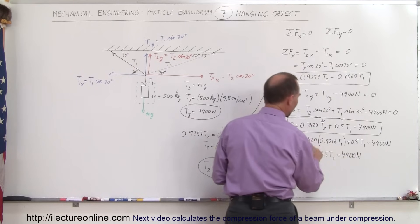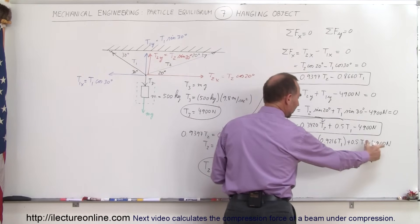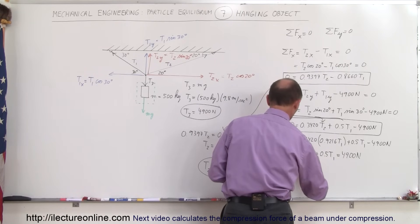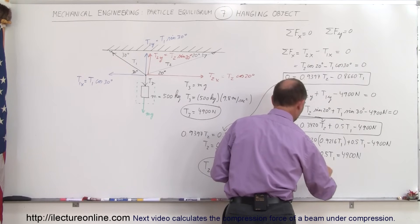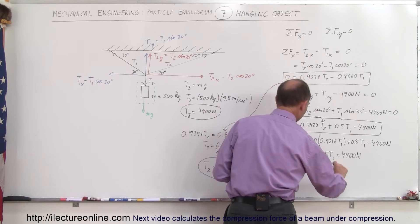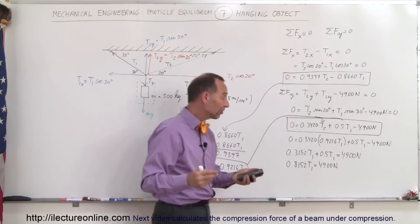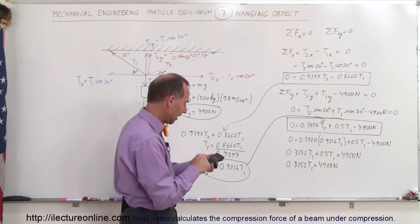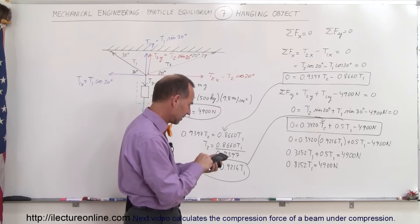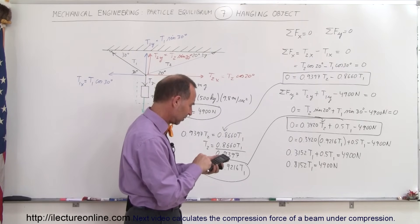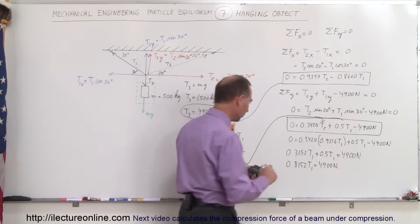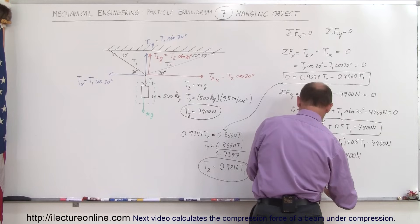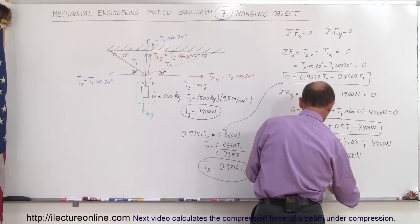Combining terms: 0.8152·T1 = 4900 newtons. Dividing both sides by 0.8152 gives T1 = 6011 newtons.